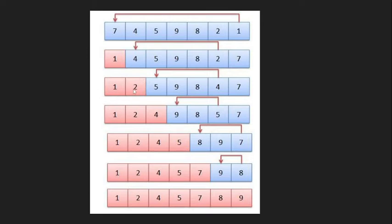In the second iteration, elements are swapped again. We continue through the unsorted portion of the array. In the fourth iteration, elements are swapped. Then 8 and 7 are swapped. 9 is the largest element and is placed in its correct position. Now the array is totally sorted.